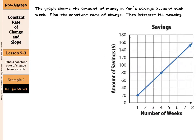Now the graph shows the amount of money in Yen's savings account each week. Find the constant rate of change, then interpret its meaning. Well, we're given two points on this graph. We're given this point here that is 1, 20 and we're also given a point right here on the graph and that is at 4, 80.